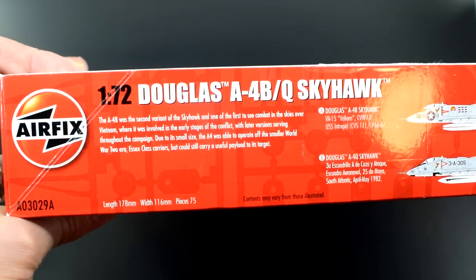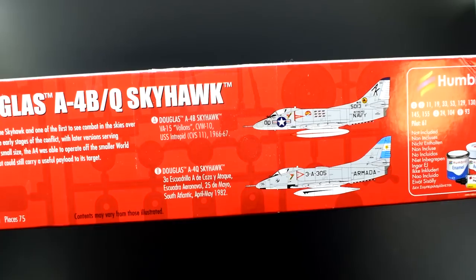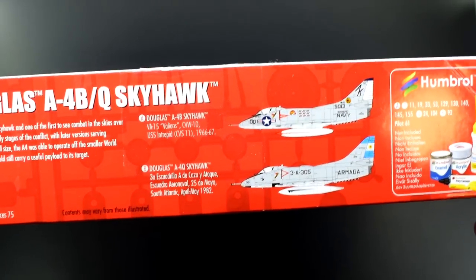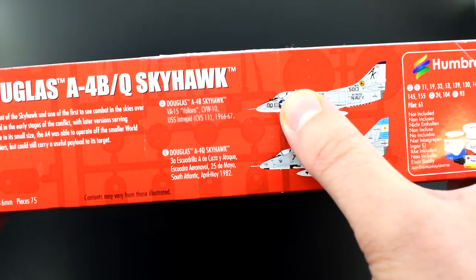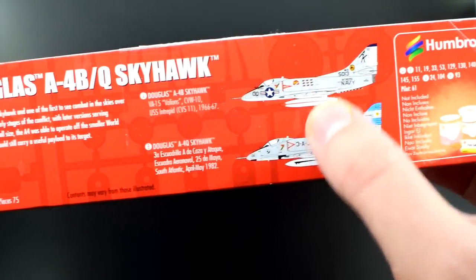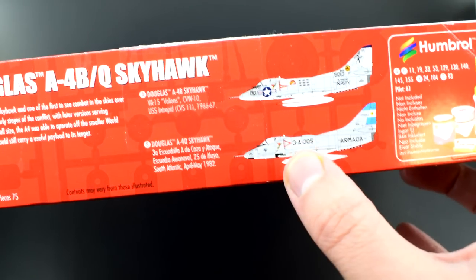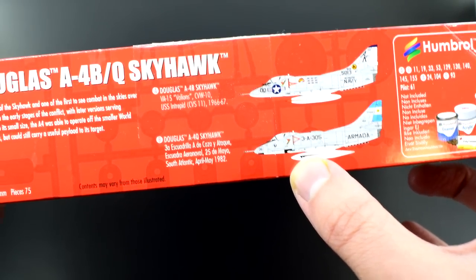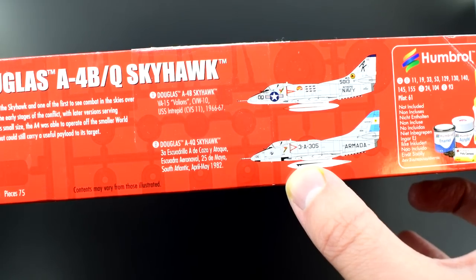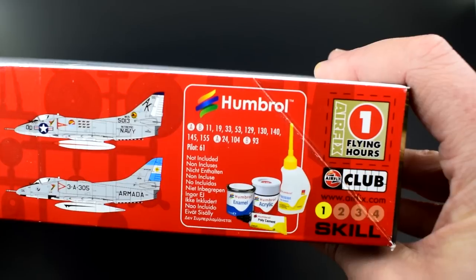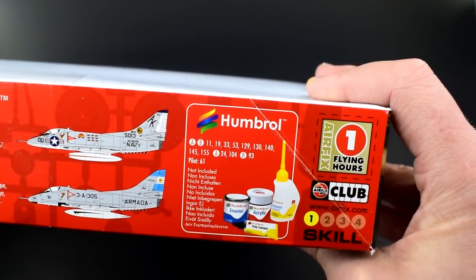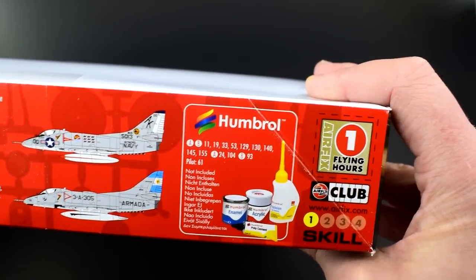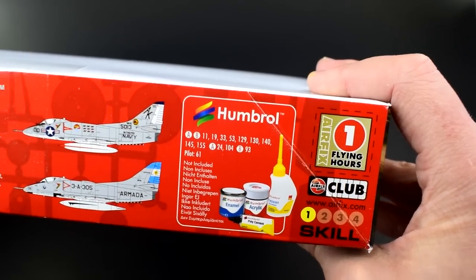On this edge, we've got some information about the actual Skyhawk as well as the two different paint schemes that are included. We've got one for a USS Intrepid aircraft in 1966-1967 and another one for the Argentinian Air Force in the South Atlantic in 1982. Over here we've got the paint colours recommended by Humbrol. Obviously Hornby owns Humbrol and Airfix so it makes sense they're going to merge those two together.